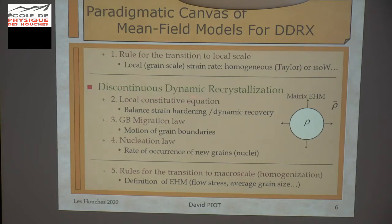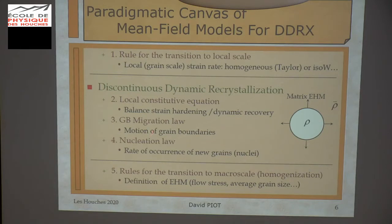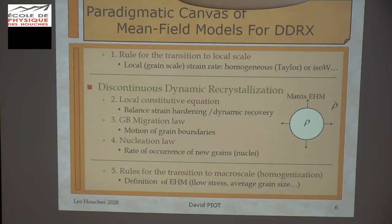The second point in the model is the local constitutive equation. We need to model the balance between strain hardening and dynamic recovery in the absence of recrystallization. It's quite easy to fit to stress-strain curves before recrystallization. We need a grain boundary migration law in order to model the motion of grain boundaries, in which the grain of interest is embedded in the equivalent homogeneous matrix. We need also a nucleation law for the occurrence of new grains — we have to predict the rate of this occurrence.